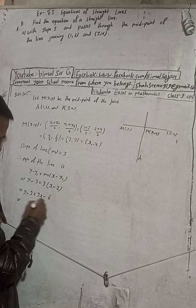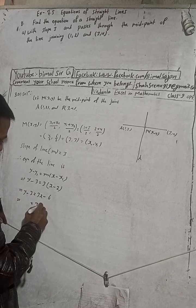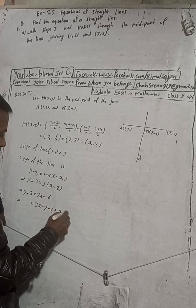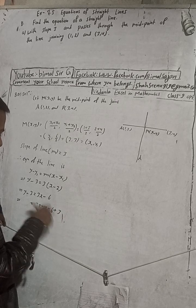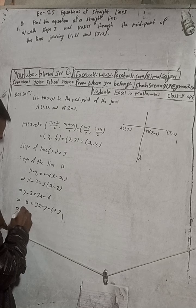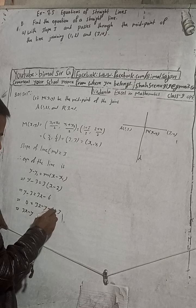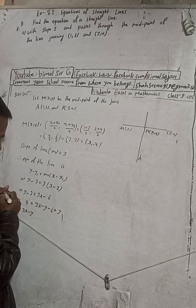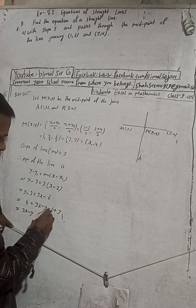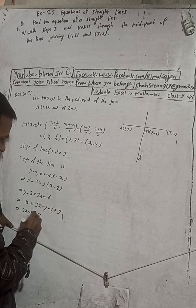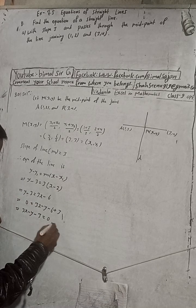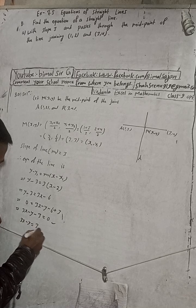Since 3x is positive, we rearrange by moving all terms to one side. We get: 3x minus y minus 6 plus 3 equals 0, which simplifies to 3x minus y minus 3 equals 0. The minus six and plus three have different signs, so we subtract: six minus three gives three, and since six is the greater number and has a minus sign, the result is minus three. So the equation is 3x minus y minus 3 equals 0, or equivalently 3x minus y equals 3.